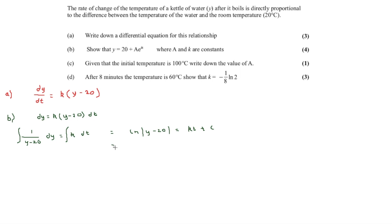In order to get it in terms of y, we raise both sides as powers of e, giving y minus 20 equals e to the kt times e to the c. Using rules of indices, e to the c becomes the constant a, so y equals 20 plus a e to the kt — which is exactly the form required.